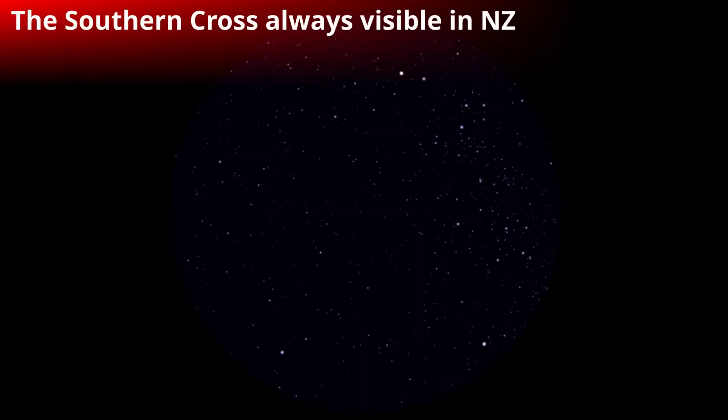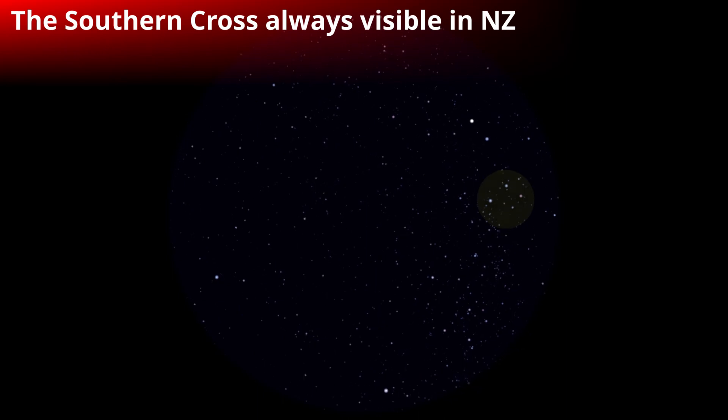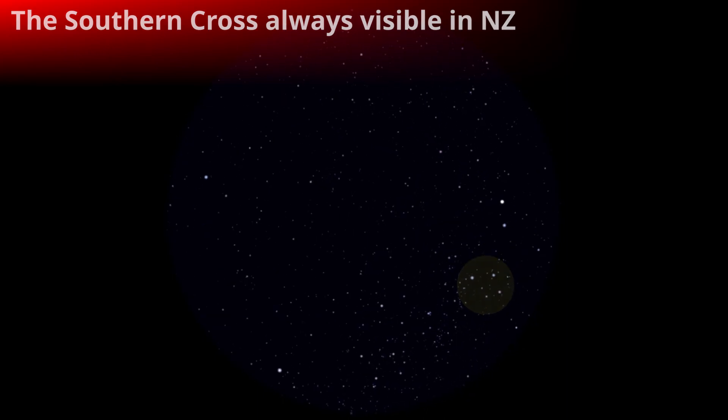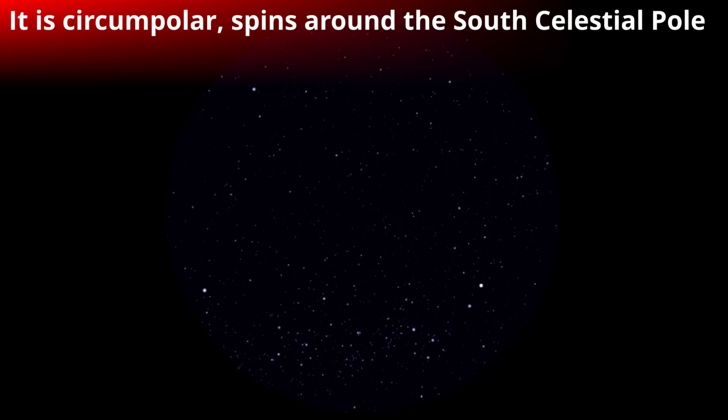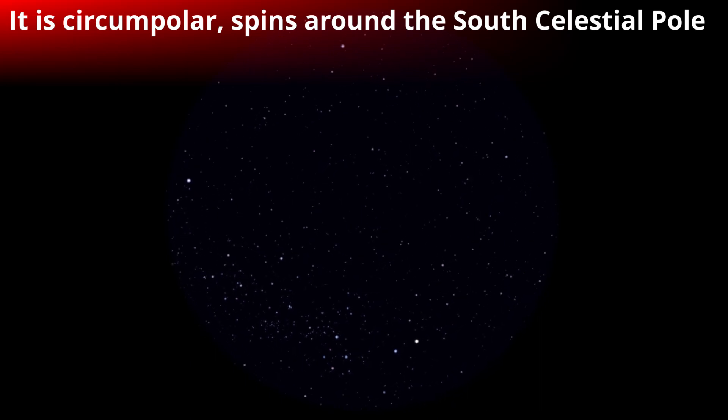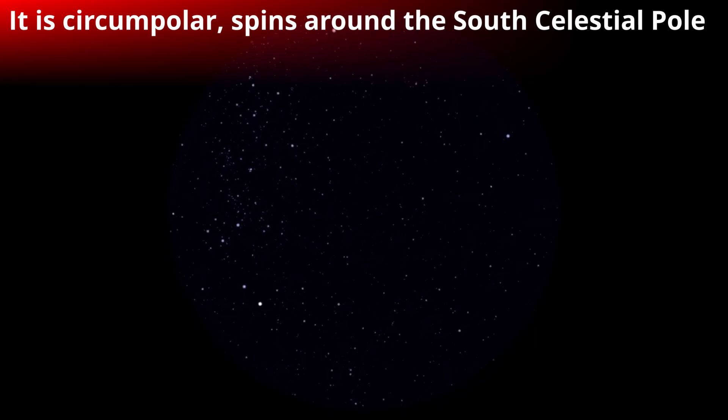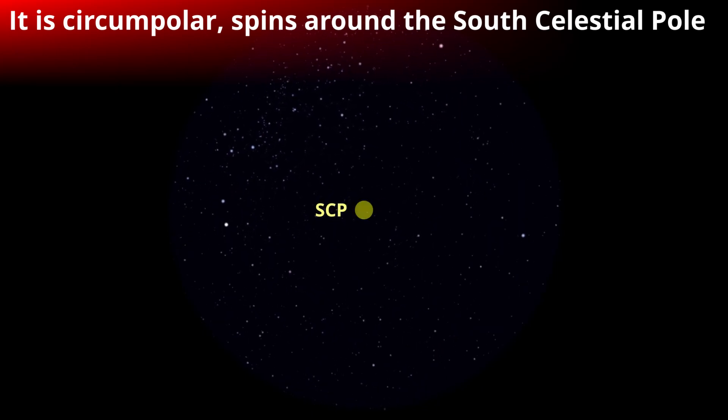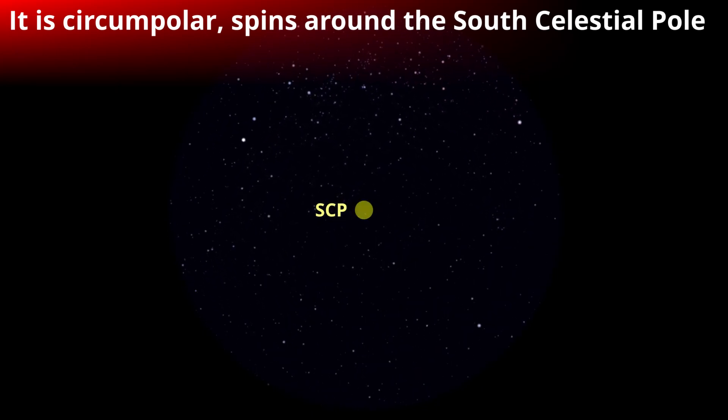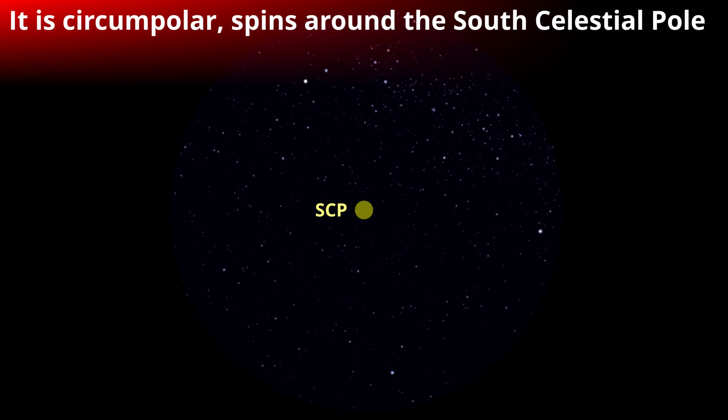For New Zealand, the constellation is always visible, except when it's cloudy, because it's what we call circumpolar. This means that it stays visible in the sky through the full rotation of the sky about the south celestial pole, and of course that rotation is caused by the rotation of the Earth.